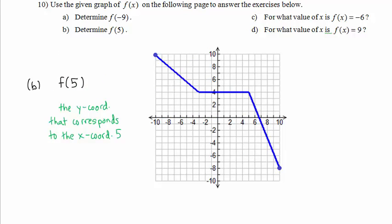In Part B, we must evaluate f of 5. f of 5 is the y-coordinate that corresponds to the x-coordinate 5. So we are looking for this point, 5 comma our answer is the y-coordinate. Here is the point whose x-coordinate is 5. What is its y-coordinate? The answer is 4. That is, f of 5 is equal to 4.